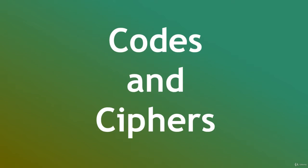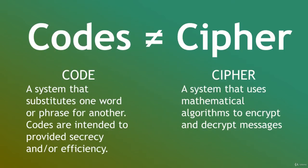Ciphers tend to be much more effective. If you had to replace whole words by a symbol, you would need a lot of symbols. Whereas if you needed to replace individual letters, you would need approximately 26 symbols. To simplify: a code is not the same as a cipher. A code is a system that substitutes one word or phrase for another, intended to provide secrecy and or efficiency.